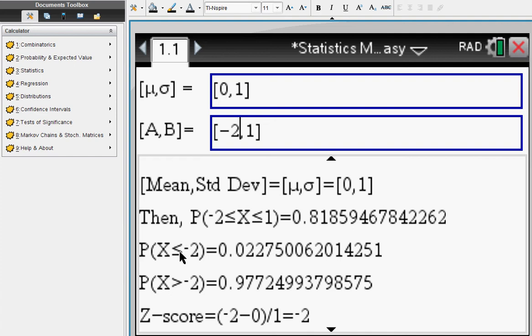The probability below negative 2 is going to be this, above negative 2 is going to be that. And we also have a z-score computed for you down here.